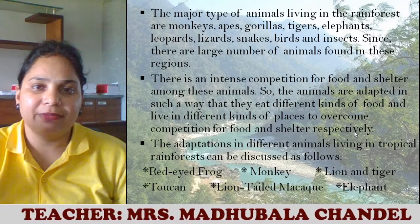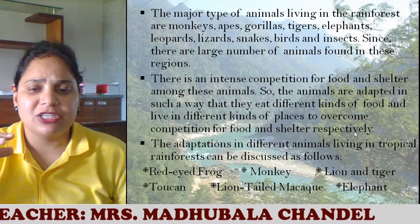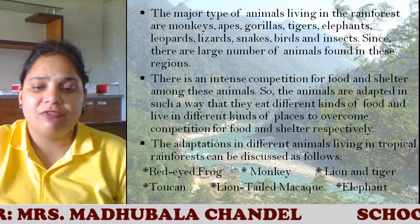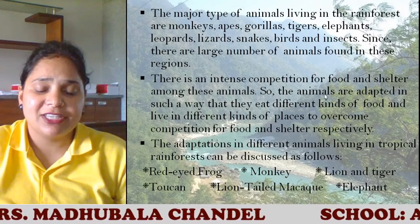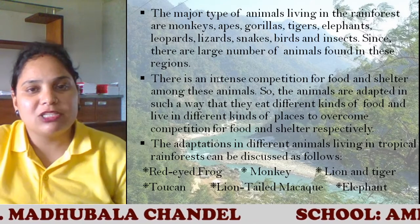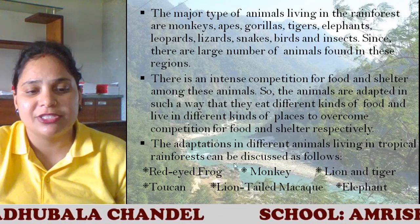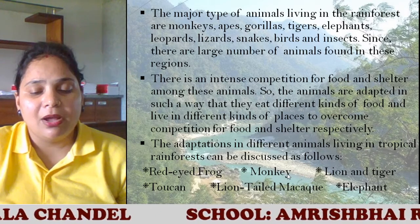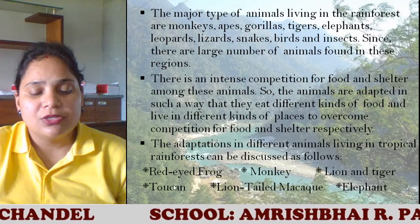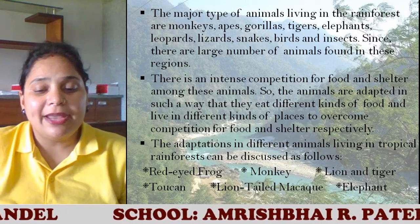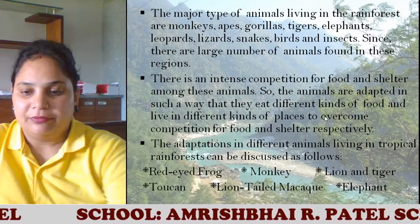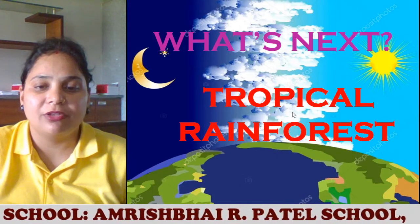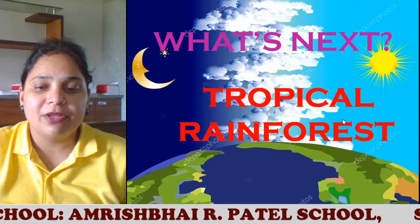The body structure of all animals is different — the place they live and their body structure are all different from each other. Adaptation in different animals living in tropical rainforests will be discussed in the next sessions. Animals we will study include the red-eyed frog, monkey, lion and tiger, toucan bird, lion-tailed macaque, and elephant.